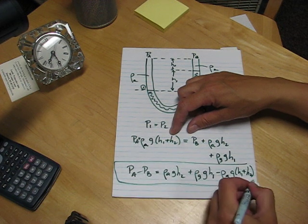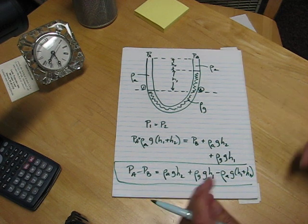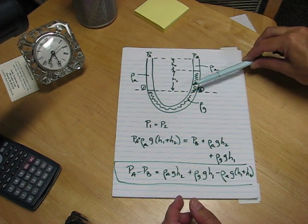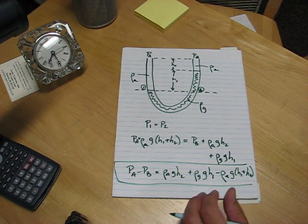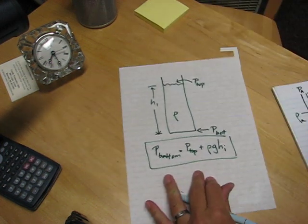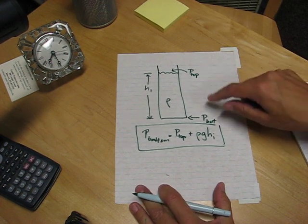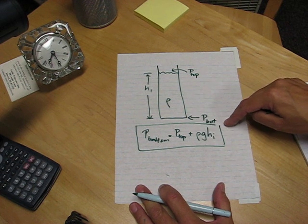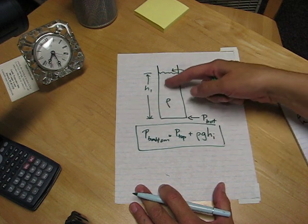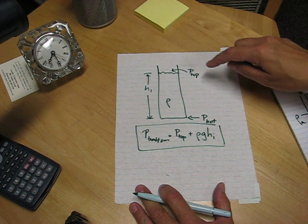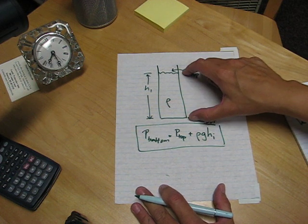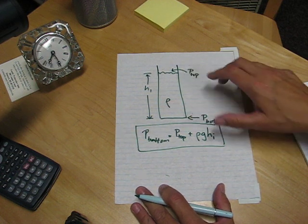This technique works on any manometer with just those two principles: that the pressures are equal here, and the second principle that the pressure at the bottom of a column of fluid, no matter what its cross-section, the cross-sectional area does not matter, is the pressure at the top plus ρgH. Thank you.